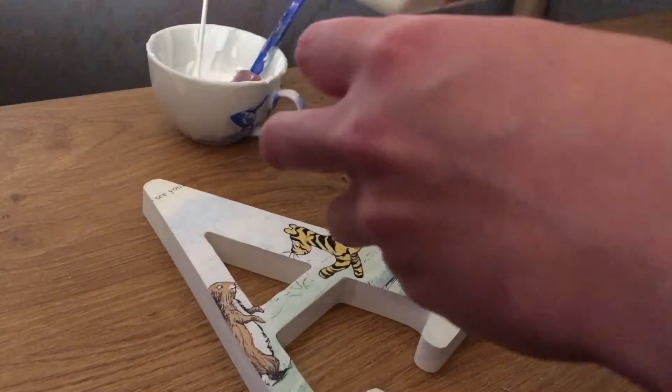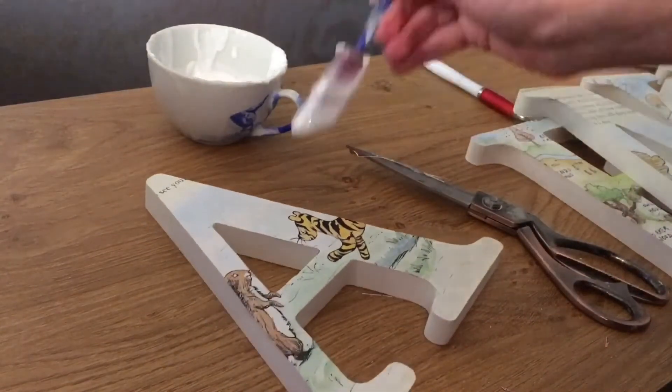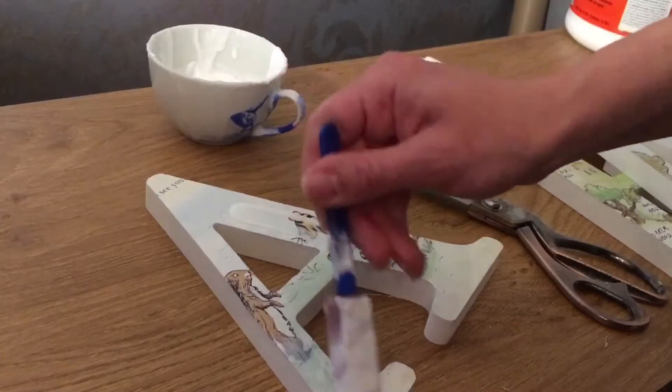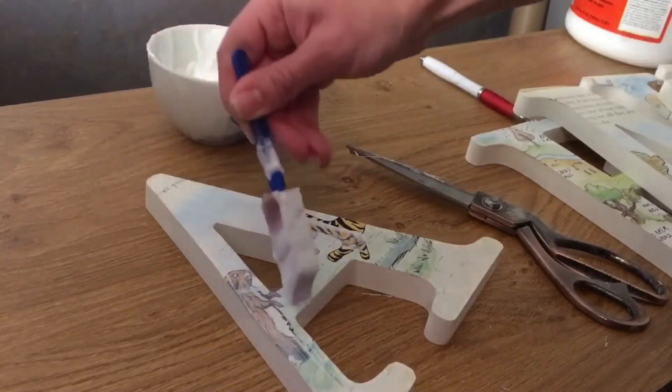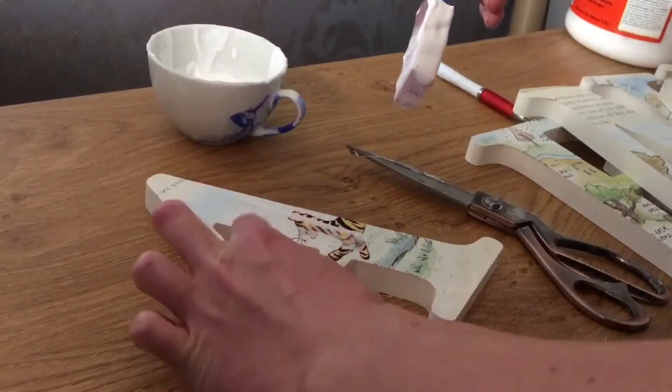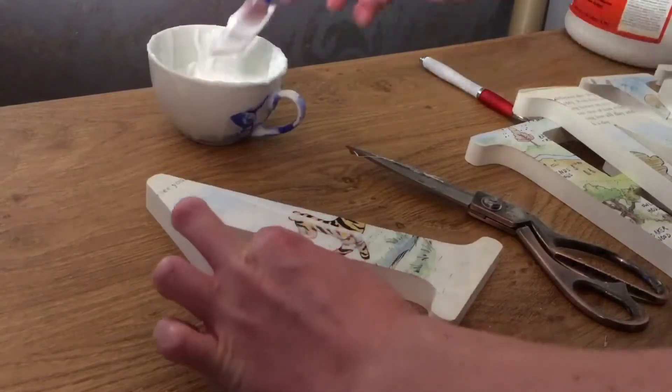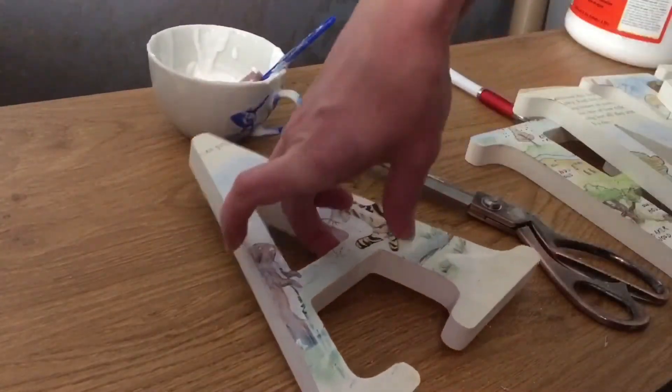And then once that's done, you want to add some Mod Podge onto the top of it. Those of you that have watched my previous videos will see that I like to apply the Mod Podge in a straight line. Even though it does dry clear, you can still see the lines. So don't let that fool you. So if you just paint it in a straight line, then it just looks more professional and it only gives it a professional look.